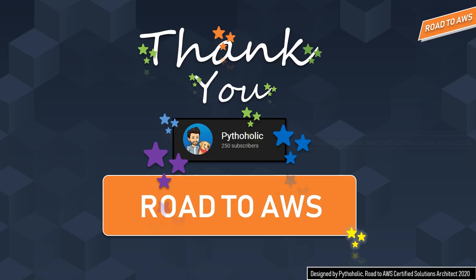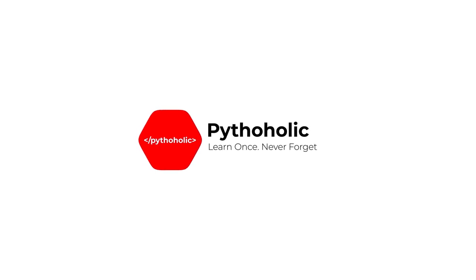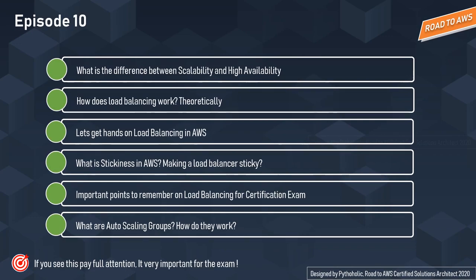Without taking any more time, let's see what we have for today's episode of Road to AWS. First, we'll see what scalability means, what is high availability, and the differences between them. We'll look into how load balancing works, do a hands-on for load balancing, see what stickiness is, and then move on to auto scaling groups. Make sure you watch till the end for important exam points for the AWS Certified Solutions Architect Associate examination.